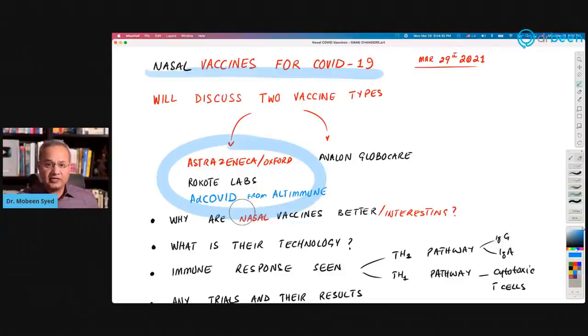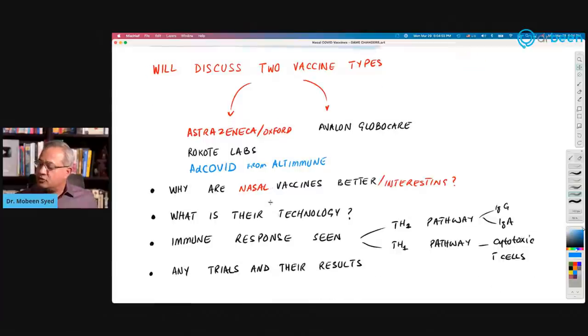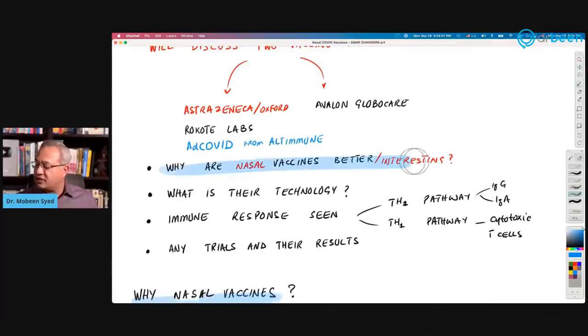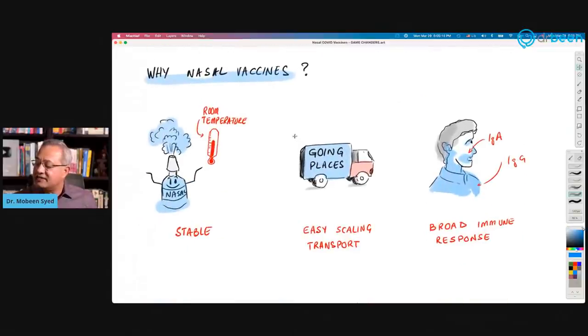Two groups of companies. One is this group. This is all adenovirus-based vaccines to be sprayed in the nose. And here there is another one, Avalon Global Care, which is a particle, an artificial particle-based company. So we'll look into what are these nasal vaccines, are they better, what are the concerns, what is the technology, what is the immune response type, and are there any trials?